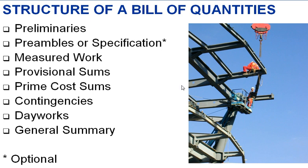The general structure of a Bill of Quantities is as follows. We have the preliminary items at the very front of the BOQ. Preliminaries relate to contract conditions, health and safety, welfare, insurances, supervision, and all other items which have a cost in the construction works but cannot be actually built into the project — for example, we need skips for the removal of rubbish, so there's a provision for the pricing of waste disposal within the preliminary section. We also need to ensure that we have the correct insurances in place, which will also be priced in the preliminaries.